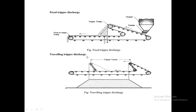The second type of tripper discharge is traveling tripper discharge. In this arrangement, the tripper reciprocates along the belt length between two limits. There are two tripper points fixed along the belt length, and between those two limits we get the required discharge from the conveyor.